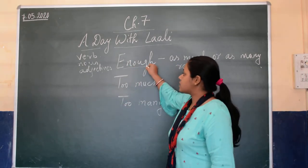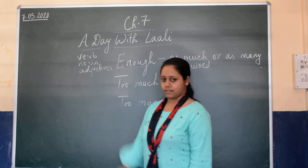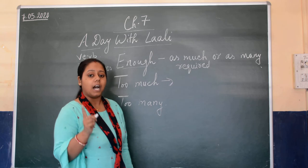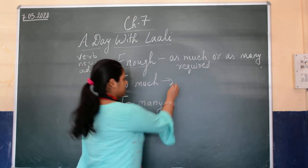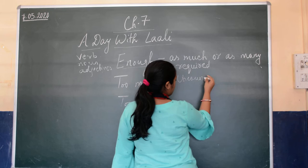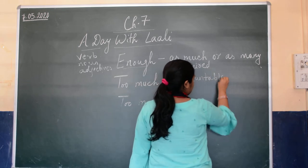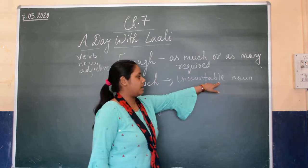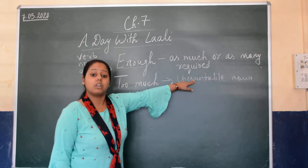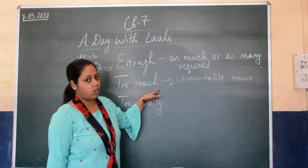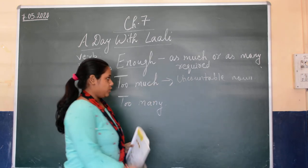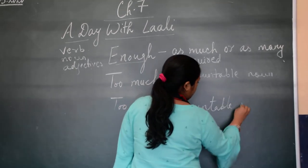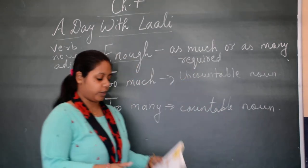So, enough is used with verb, noun, and adjectives. Now, too much is used with uncountable nouns — like water, air — which we are not able to count. And too many is used with countable nouns. I hope children it is very clear for you all.